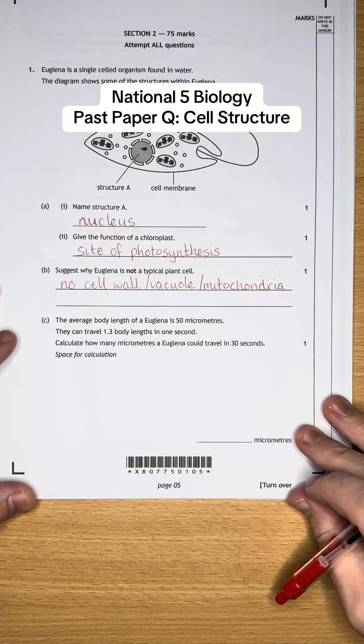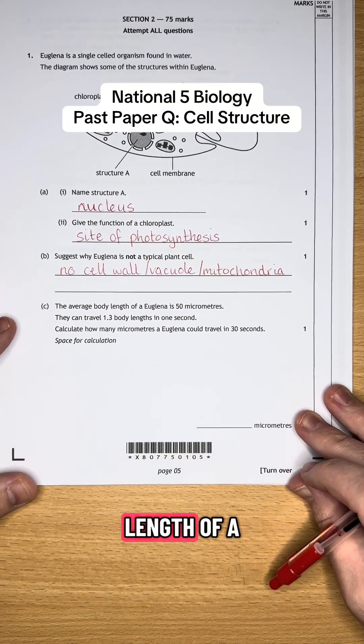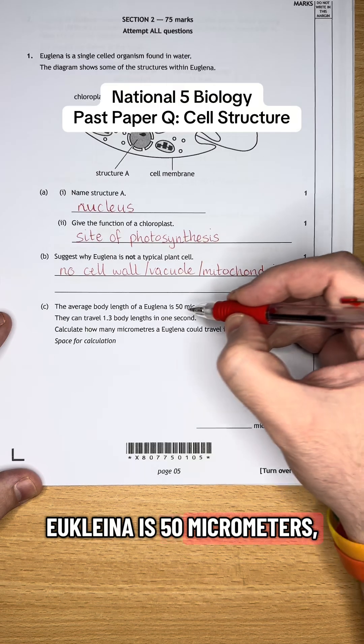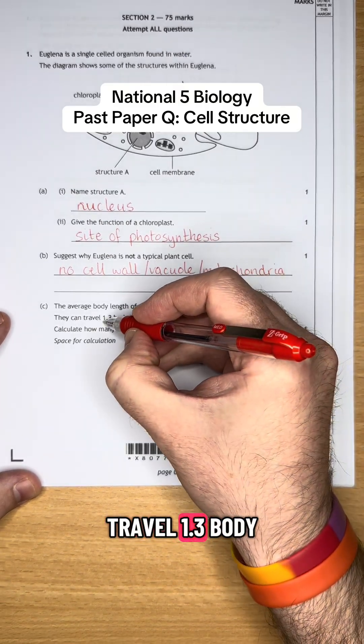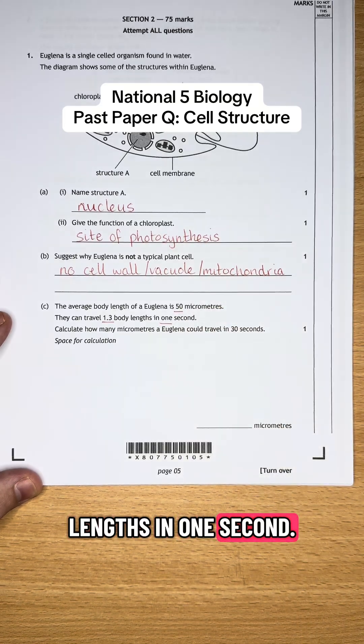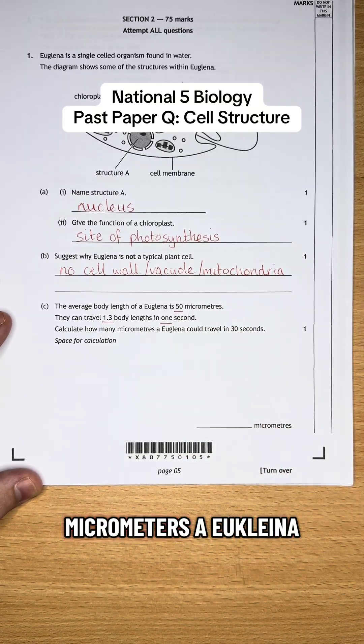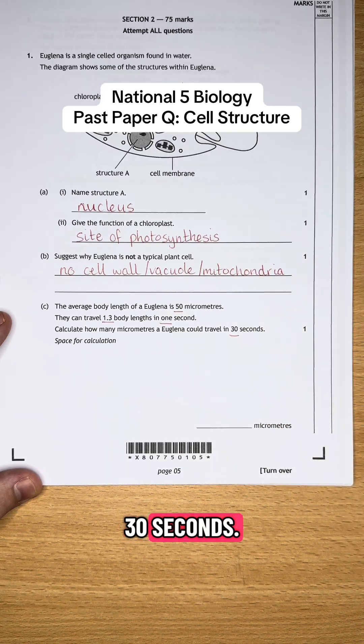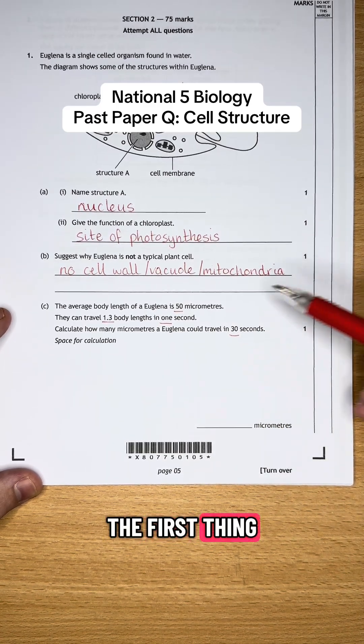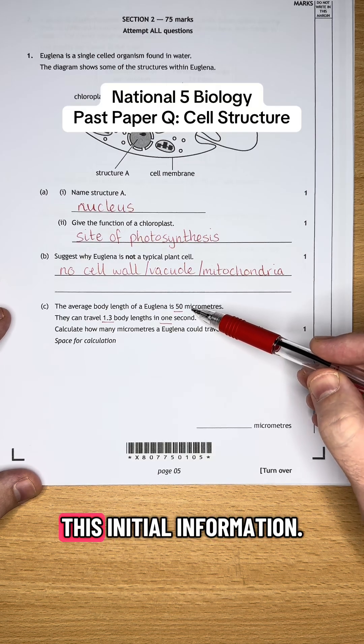And in part C, the average body length of Euglena is 50 micrometers. And it can travel 1.3 body lengths in one second. Calculate how many micrometers a Euglena could travel in 30 seconds. So the first thing we need to do is we need to do something with this initial information.